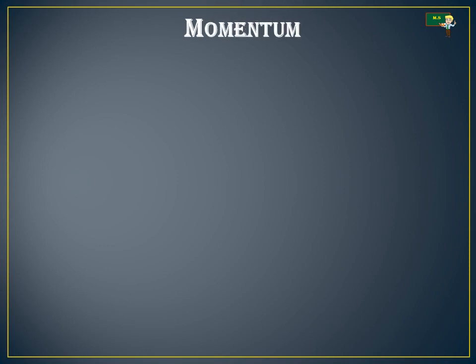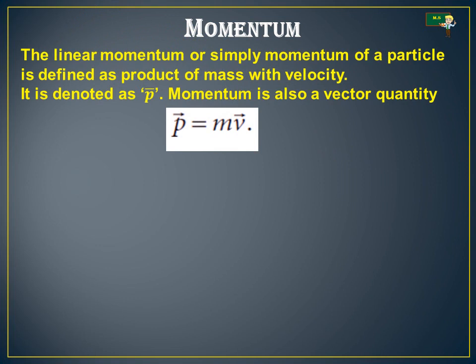Now, let's see what momentum explains. The linear momentum, or simply momentum, of a particle is defined as the product of mass with velocity. Momentum is denoted with p-vector. Momentum is also a vector quantity which has magnitude and direction. So p is equal to m into v, that means mass multiplied by velocity. The direction of momentum is also in the direction of velocity, and the magnitude of momentum equals the product of mass and speed of the particle.